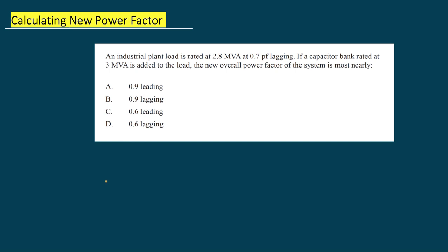Hi everyone and welcome back to another video. In today's video we are going to be solving a power factor problem. We are given here a load of 2.8 MVA at 0.7 power factor lagging. We added a capacitor bank at 3 MVA to the load, and the question here is what is the new overall, the new system power factor? So what are my knowns and my unknowns?